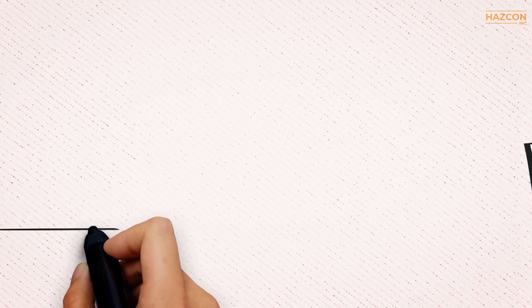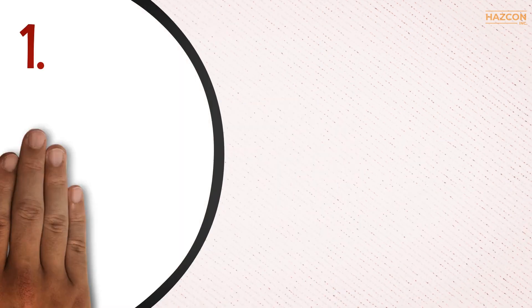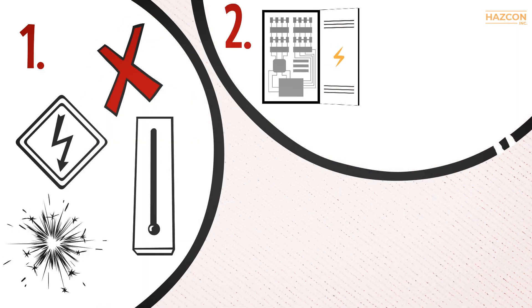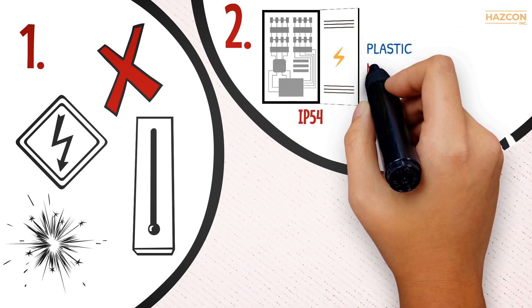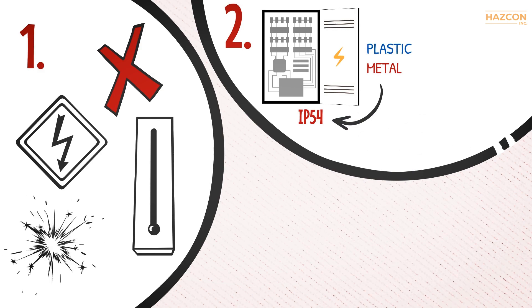The increased safety protection technique involves designing electrical devices so that arcs, sparks, and hot surfaces are avoided. The electrical components are enclosed in an IP54 rated enclosure. The enclosure can be made of plastic or metal but needs to be able to maintain the IP54 rating at the minimum.